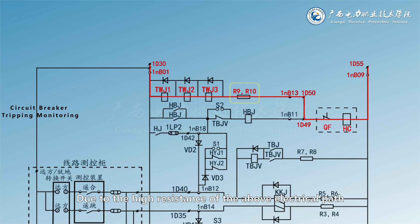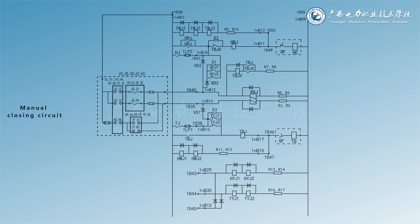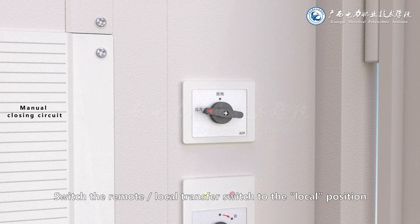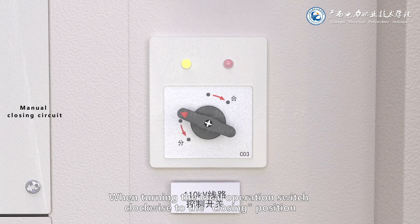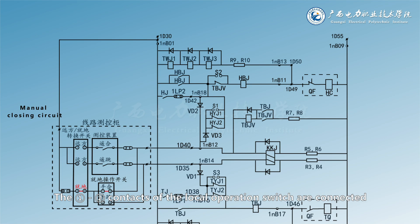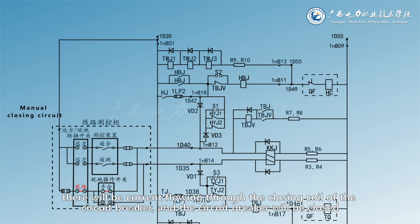Due to the high resistance of the above electrical path, the current flowing through the closing coil of the circuit breaker is very small, which is not enough to make the closing coil act and close. On the line measurement and control screen, switch the remote/local transfer switch to the local position. When turning the local operation switch clockwise to the closing position, the 1-2 contacts of the local operation switch are connected, and the positive power supply is sent to 1D40 and 1NB12. Therefore, there will be current flowing through the closing coil of the circuit breaker, and the circuit breaker will be closed.